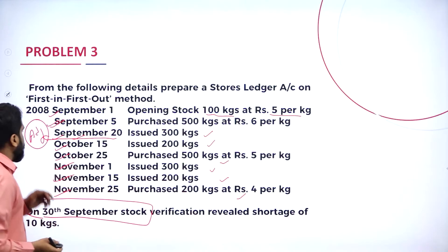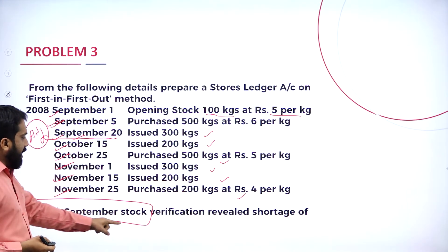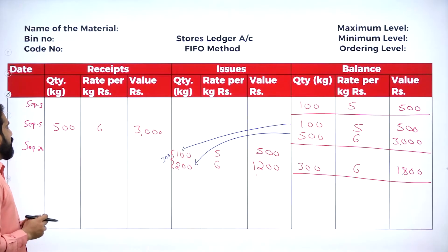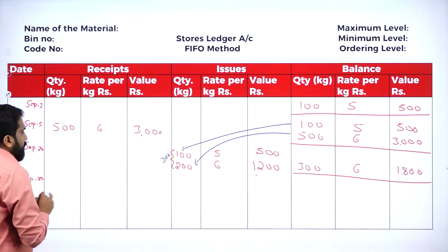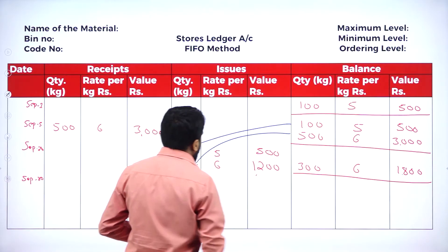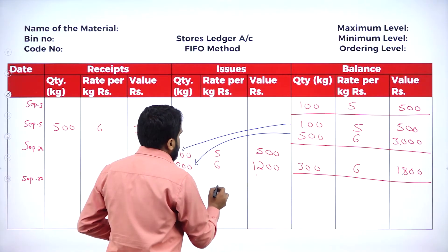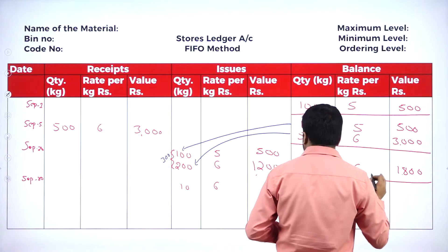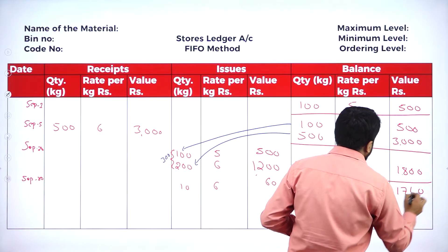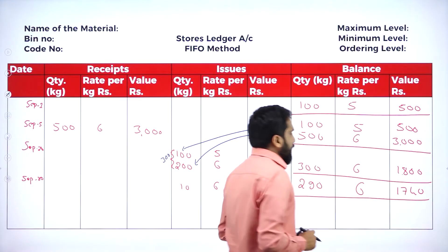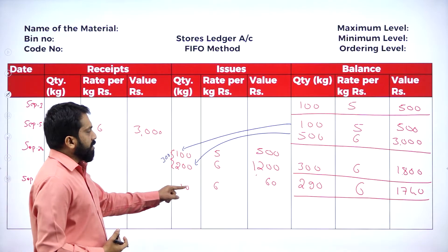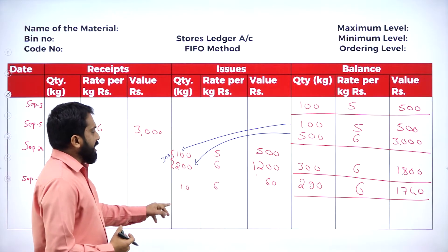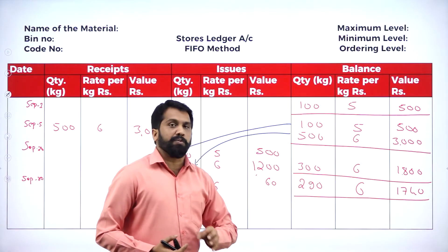After September 20th, before October 15th, we handle the September 30th adjustment: shortage of 10 kgs. Shortage is treated as an issue. Out of the 300 kg balance, take 10 kgs at rupees 6 — value 60. Balance becomes 290 kgs at rupees 6, value 1740.